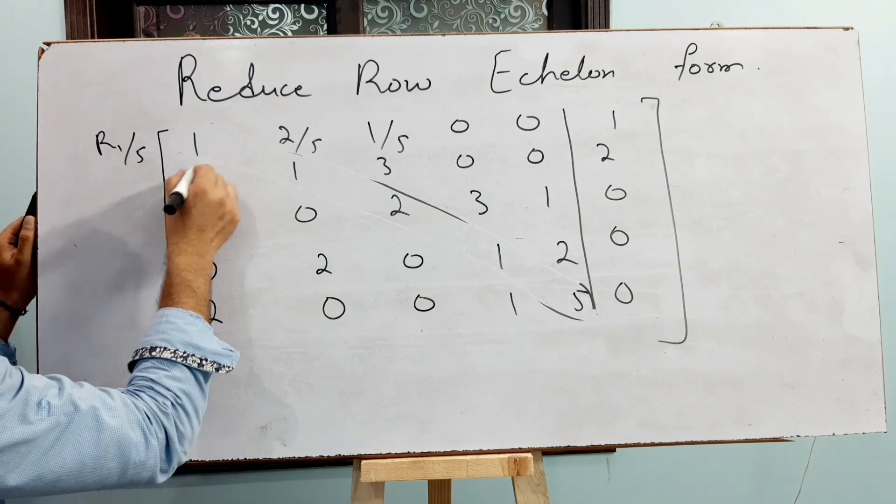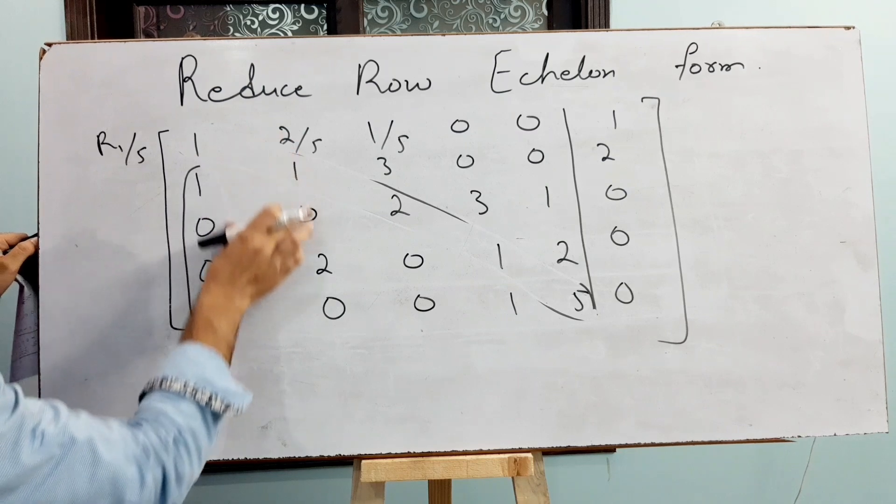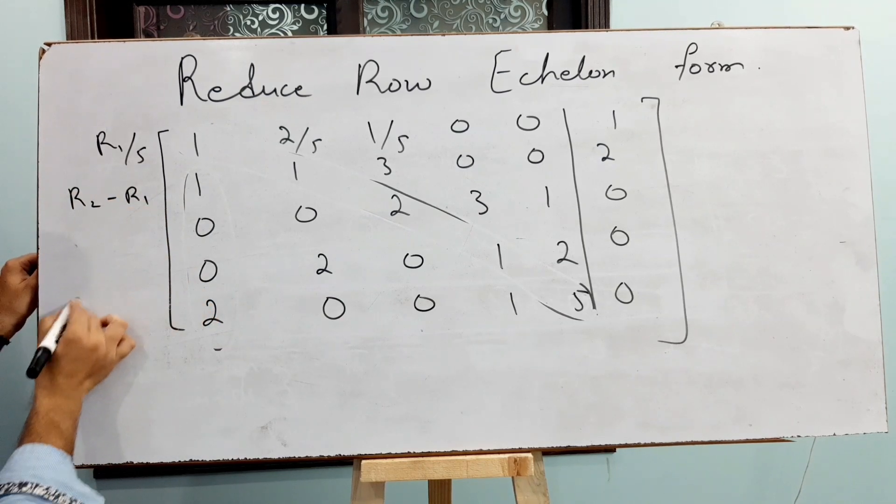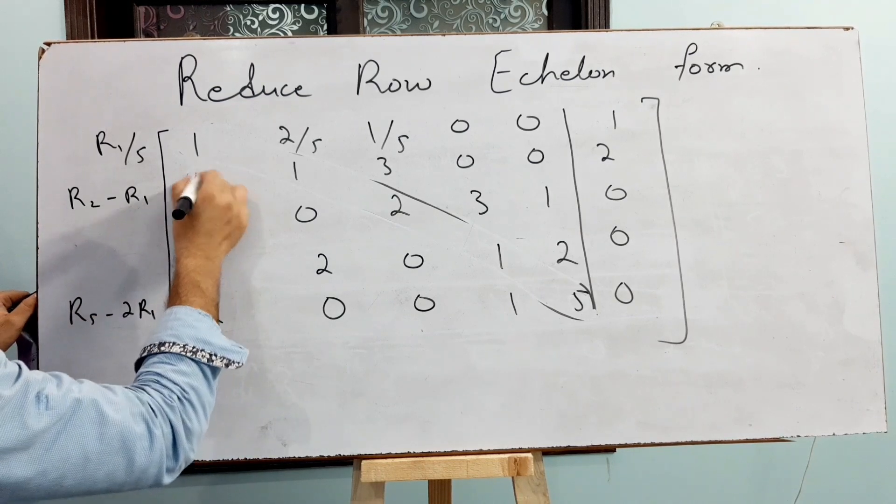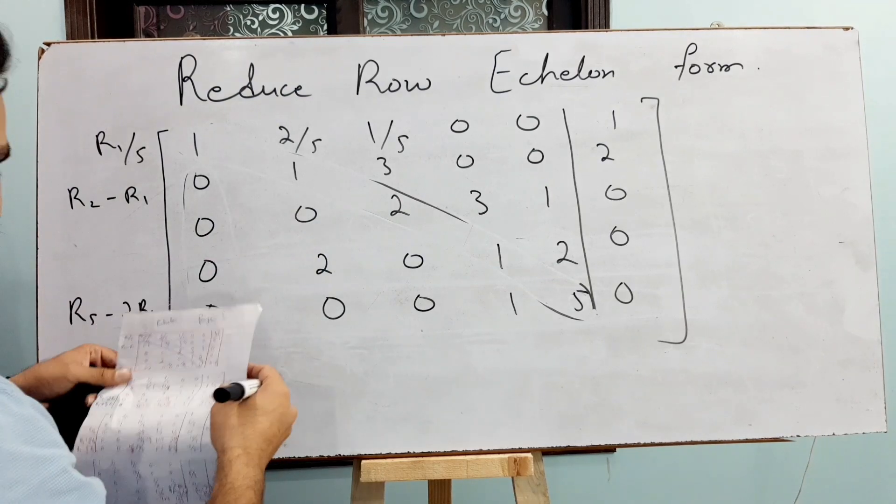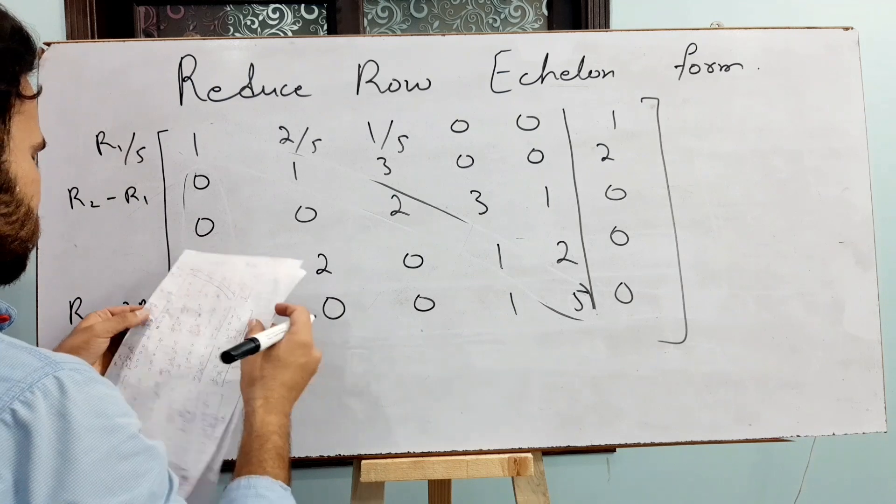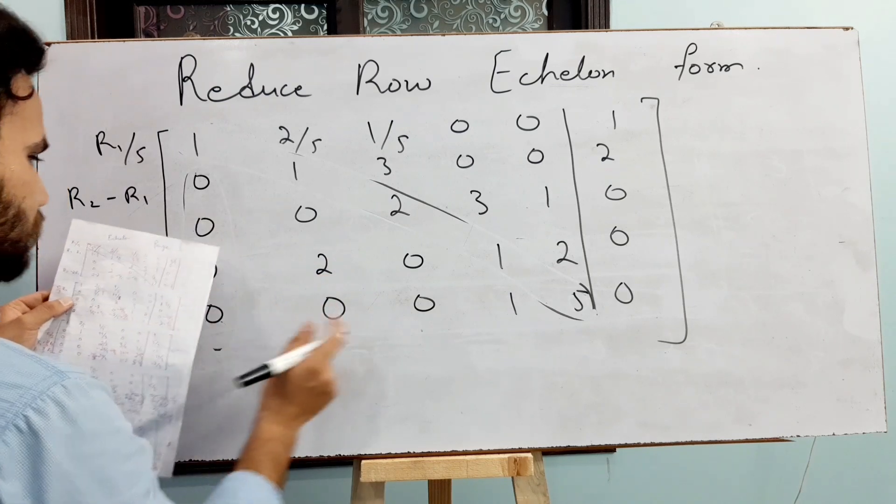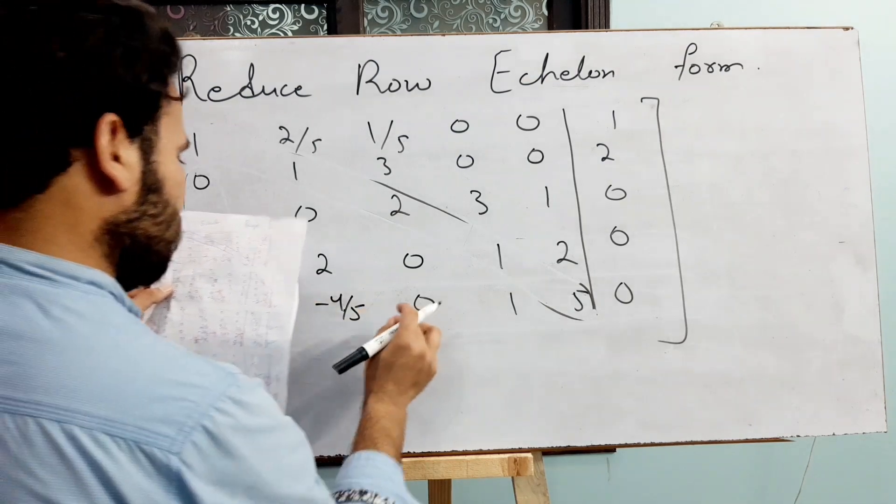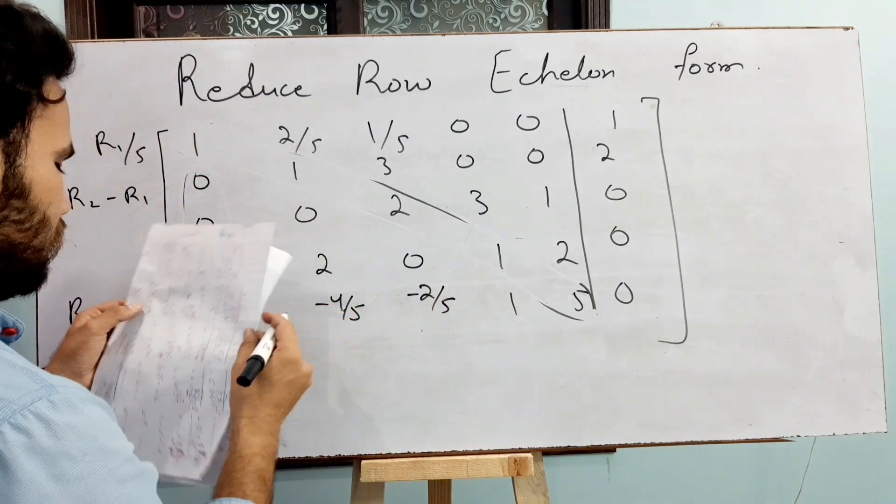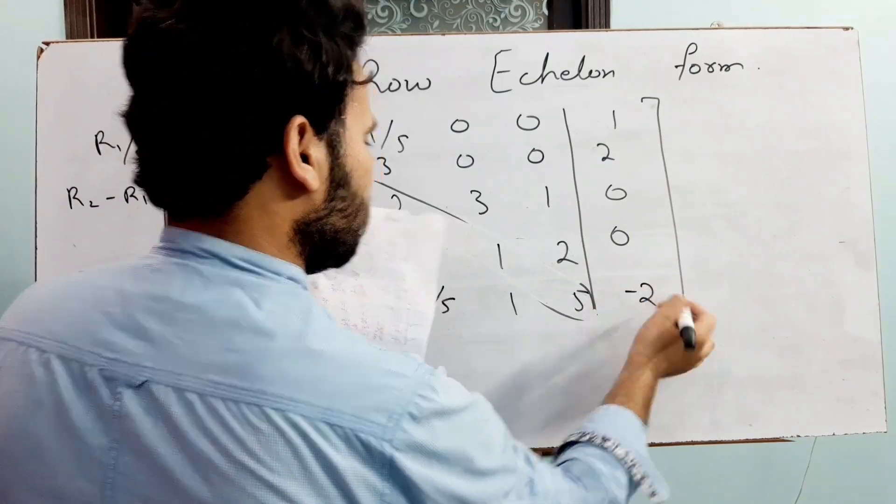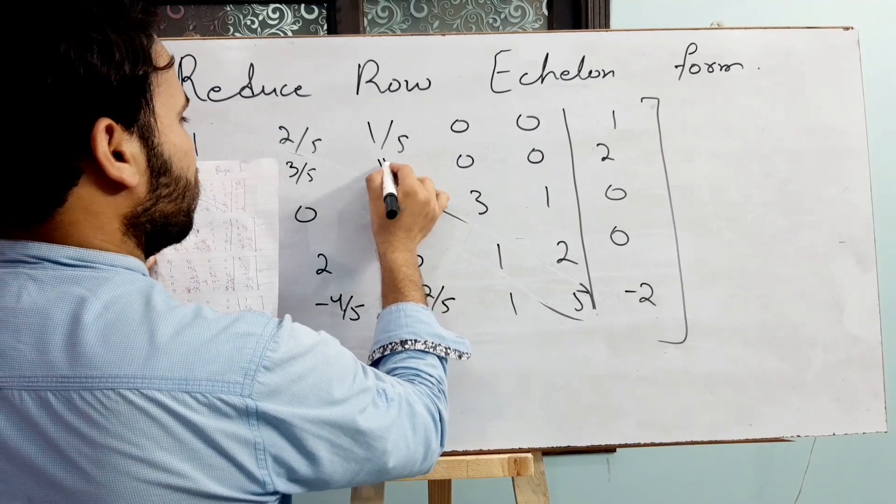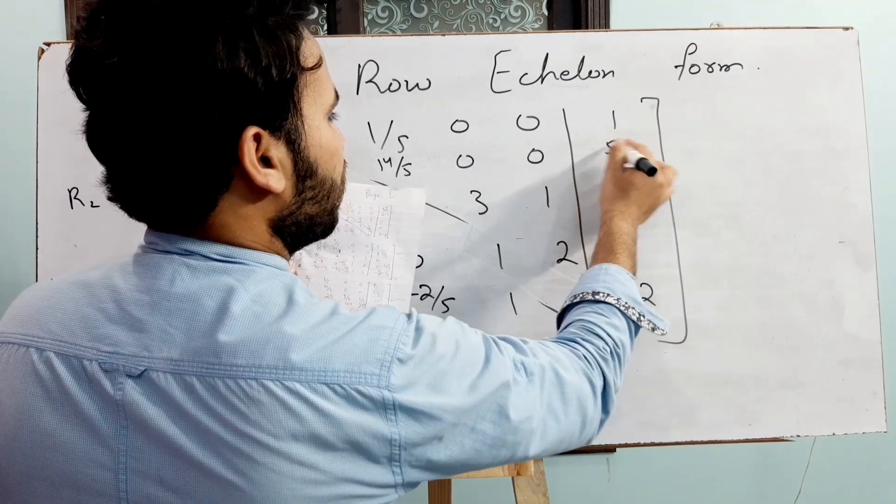And now my target is to make them all entries should be 0. So these two entries are already 0. So here I need R2 minus R1 and here R5 minus 2 times R1. Then this will be minus 4 by 5, minus 2 by 5, 1, and 5, and here is minus 2 and 2. This is minus 3 by 5 and this is minus 1.